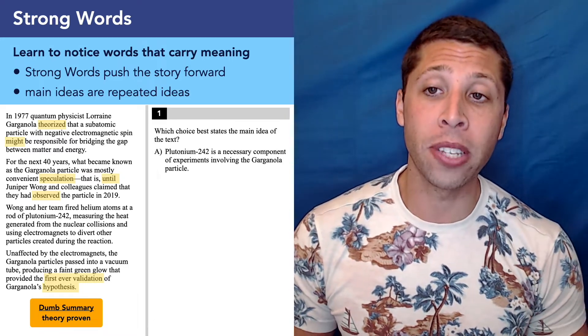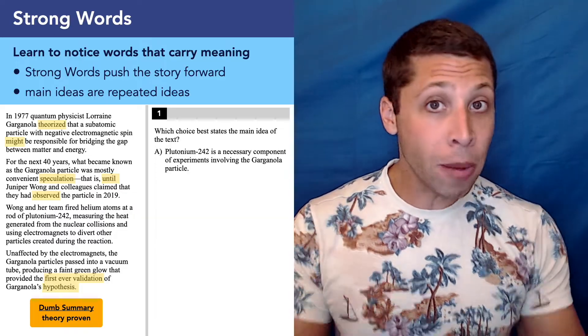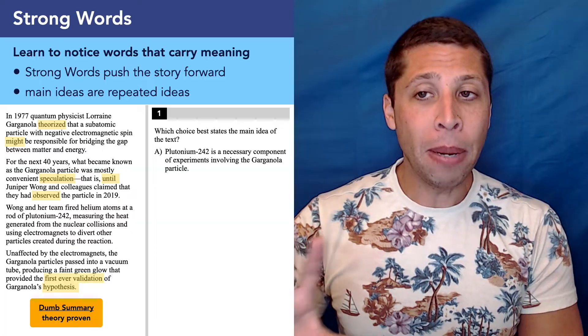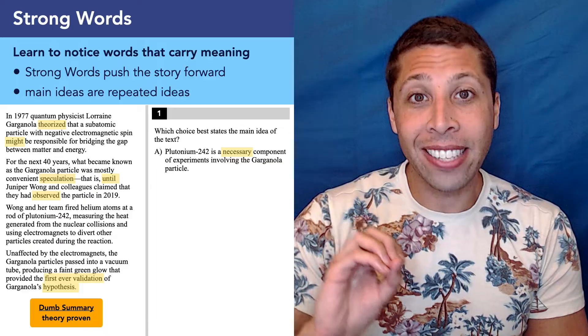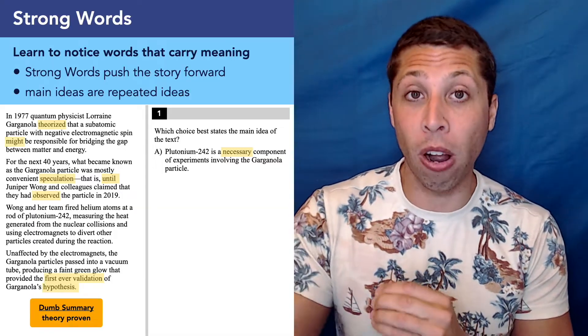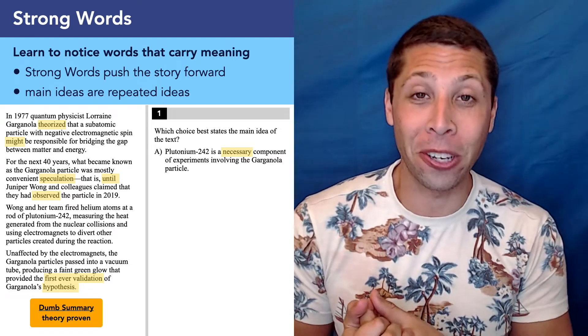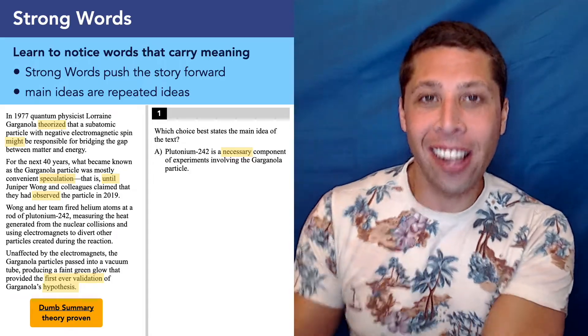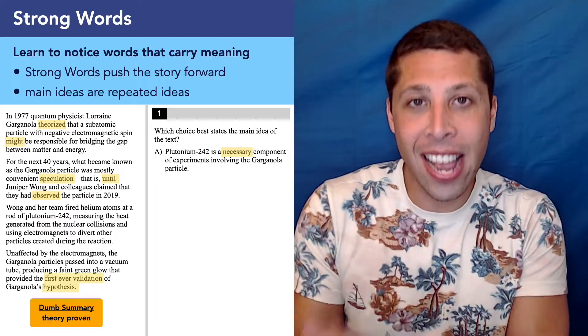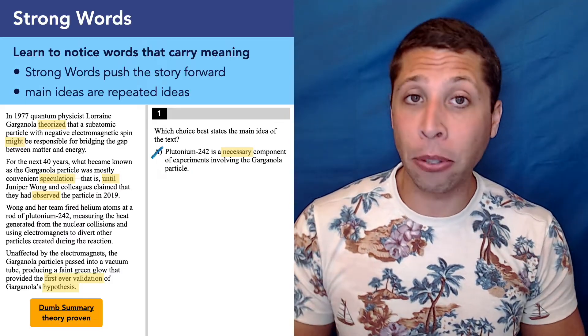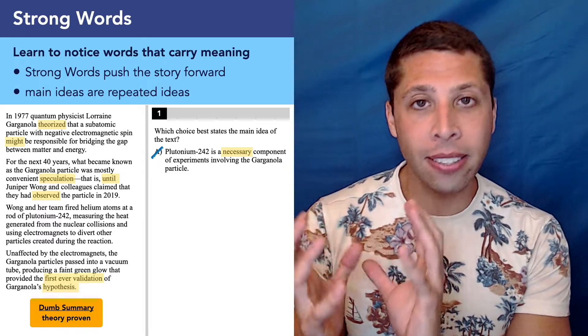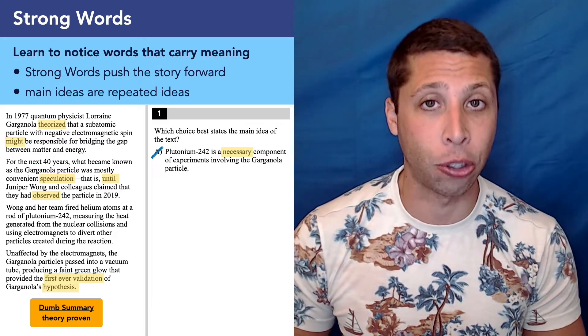So let's see if we can sort through the choices in a way that's very similar, looking for strong words. Choice A here. Plutonium-242 is a necessary component of experiments involving the Garganola particle. Well, you might eliminate that saying, plutonium is part of the story, but it's not the story. But let's really look for a strong word because it's much more to me that they say it's a necessary component. If they just said it's a component, then maybe this choice is a better choice. But right now to say that it's necessary, that's really, really strong. We couldn't know anything about this particle without plutonium-242. Maybe that's true, but if it is true, it's got to say it in the lines, and it just really doesn't here. So choice A, definitely wrong.